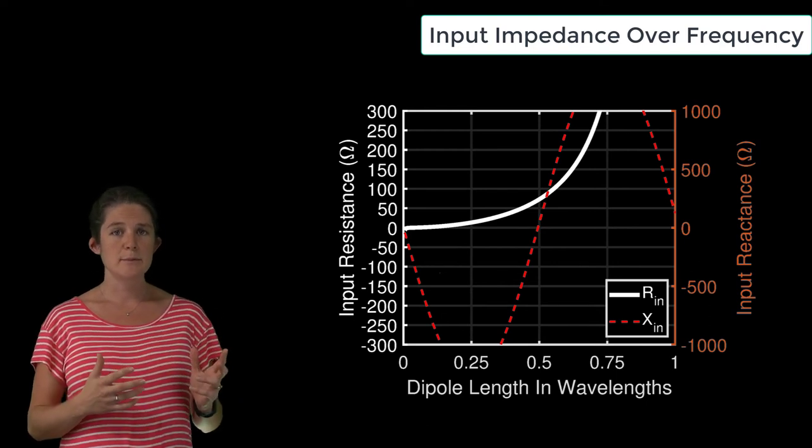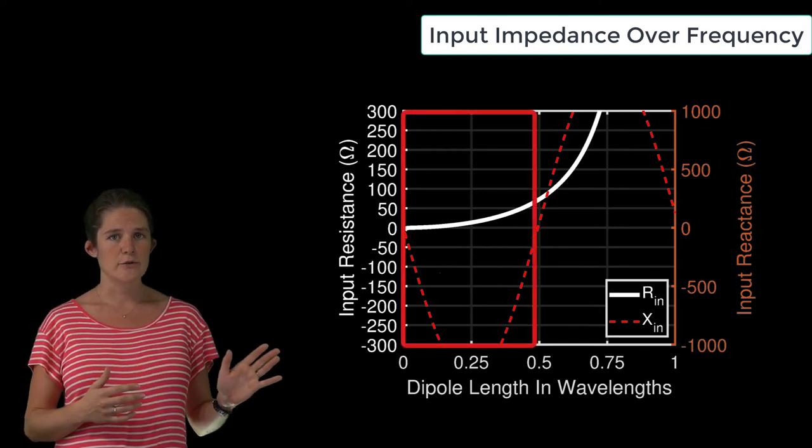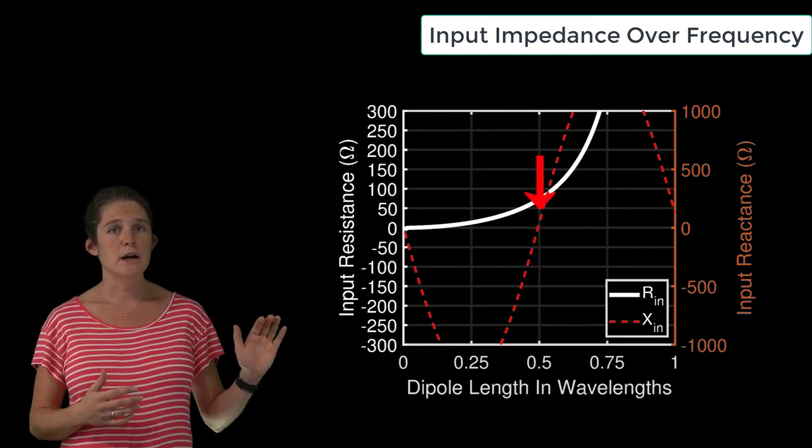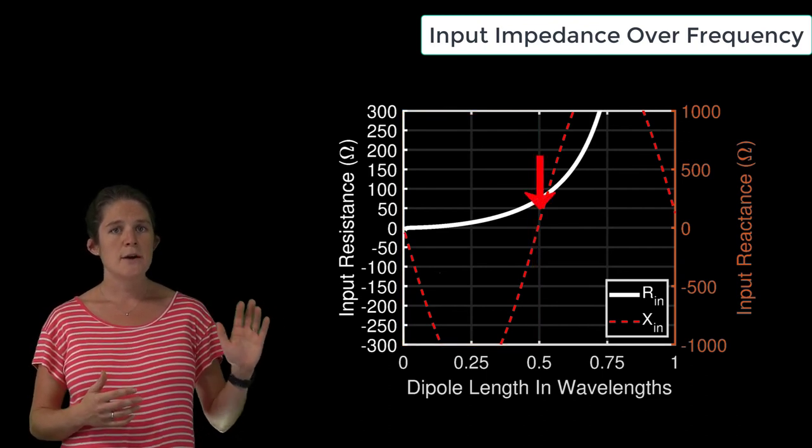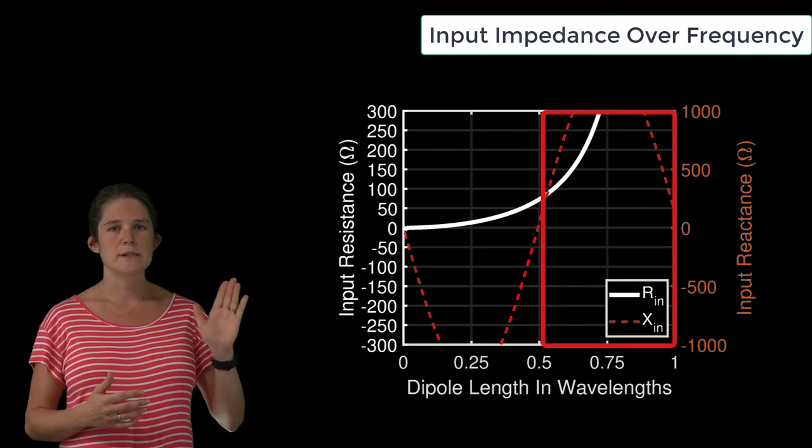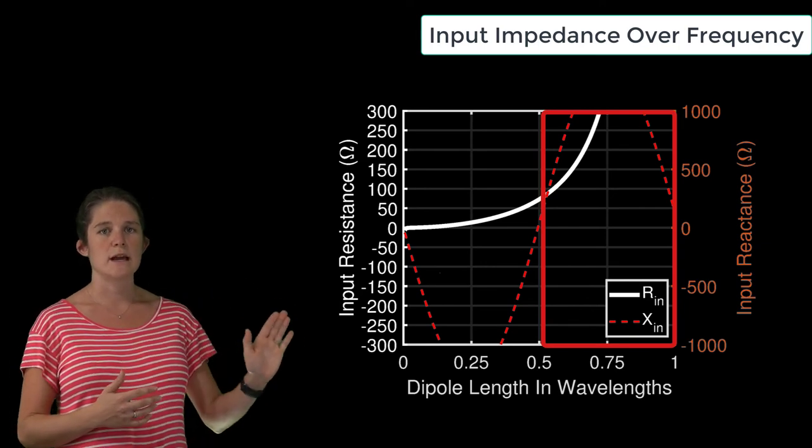So here we see that the dipole antenna is capacitive at low frequencies, goes through a resonance at approximately the half-wave frequency, and then becomes inductive at frequencies between the first resonance and the full-wave frequency.